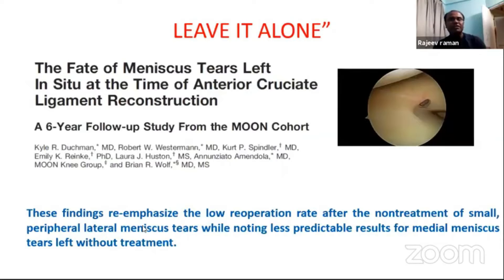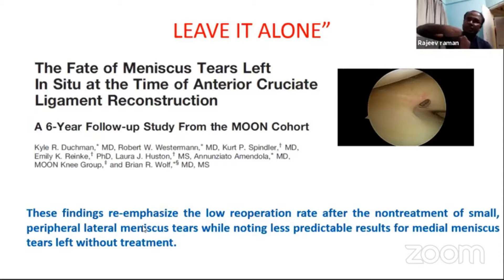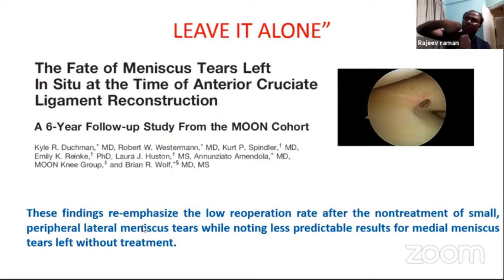The fate of the meniscus tear left in situ at the time of anterior cruciate ligament reconstruction — a Moon cohort study shows low re-operation rates, because once your knee is stabilized with ACL reconstruction there is no pivot in the knee joint. So most of this radial tear will be asymptomatic and will get a chance to heal. So if you have done ACL reconstruction and you have a radial tear, leave it.